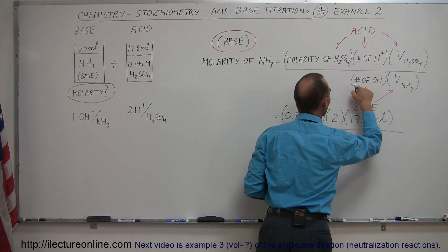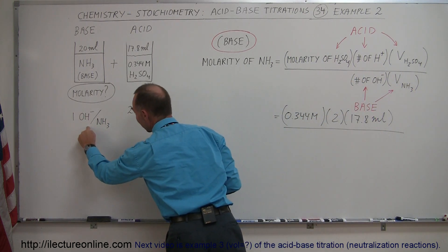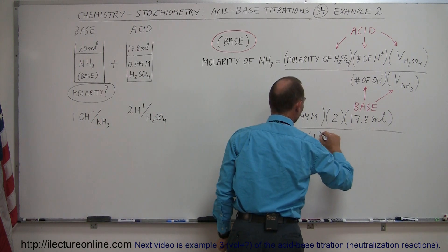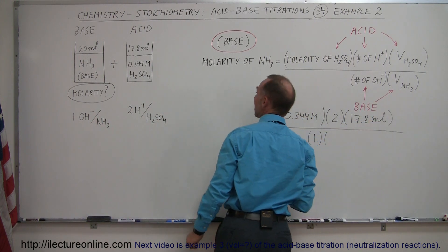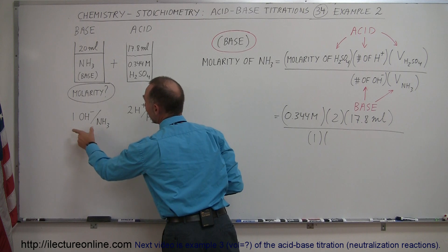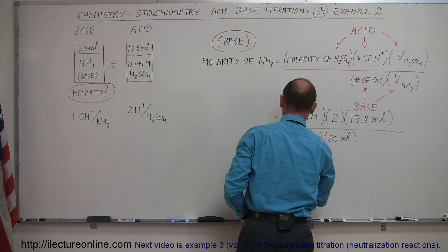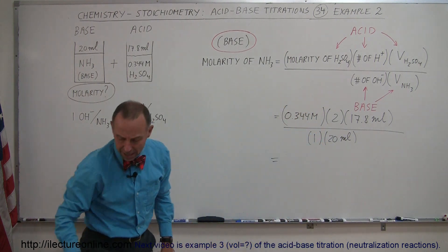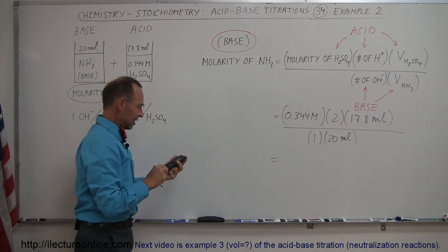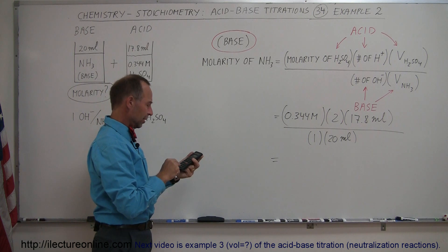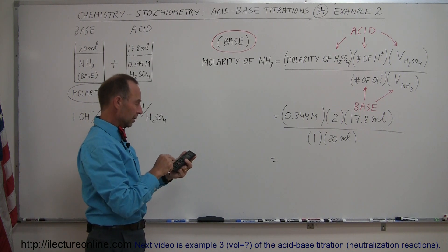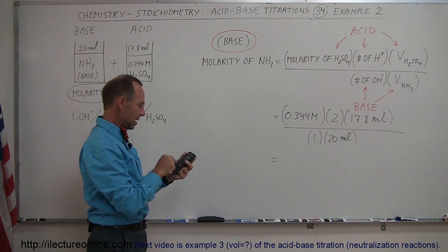So now we divide that by the number of hydroxide ions produced per molecule, which is 1, and multiply times the volume of the unknown liquid, unknown molarity liquid, which was 20 milliliters. And that will give us the molarity of the base. Let's find out. 0.344 times 2 times 17.8, and now we divide that by 20.